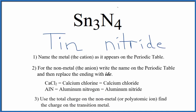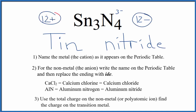We know that nitrogen forms ions that are 3 minus — the nitride ion — and we have four of them. Four times 3 minus is 12 minus. So to get this to balance out and give us a net charge of zero, we need 12 plus on the other side.